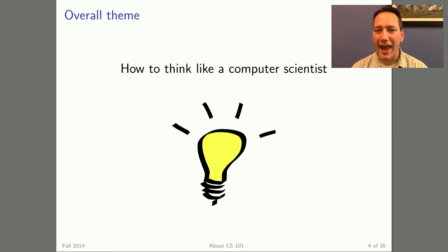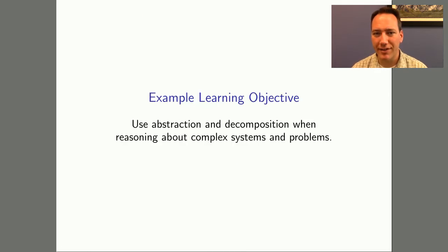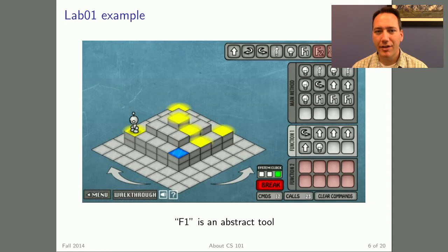Each week includes a fun, hands-on lab activity that allows you to engage with real computer science content. To give you a sense of what the course is like, here is one of our learning objectives: Use abstraction and decomposition when reasoning about complex systems and problems. For example, in Lab 1 we use Lightbot to learn how to break down algorithms into multiple parts. You'll notice in this example there's an F1 command for the robot to walk along the entire side of the puzzle.